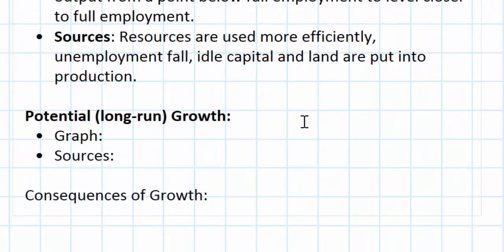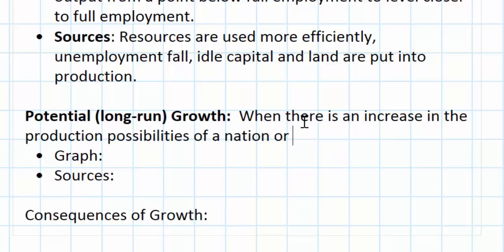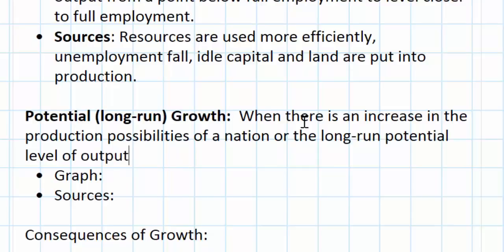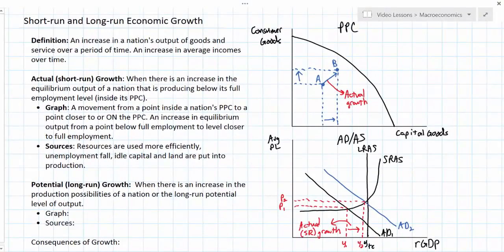Potential growth is achieved when there is an increase in the production possibilities of a nation or the long-run potential level of output. Graphically, this is illustrated as an increase in the PPC or an increase in long-run aggregate supply. Let's start with the PPC.